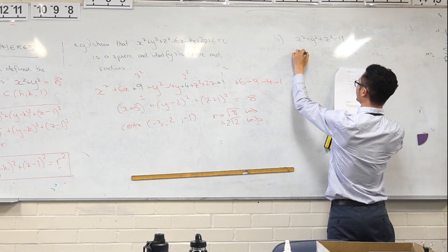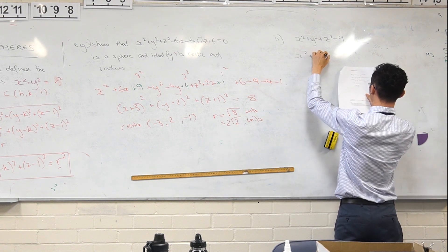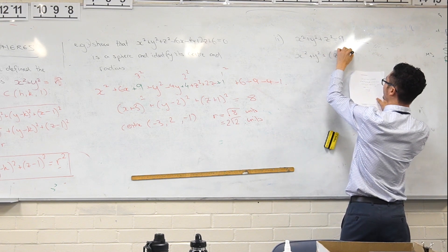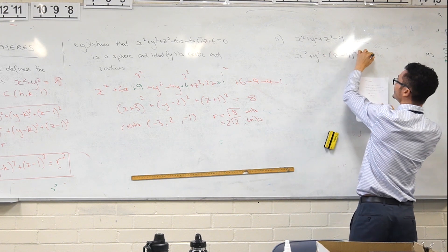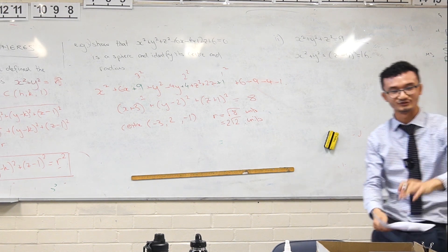But then let's take this guy: x² + y² + (z - 4)² = 16. So what's different about this guy? Where is he in relation to it?